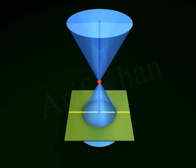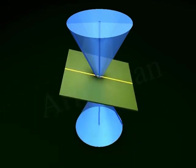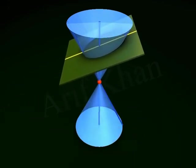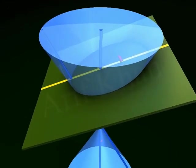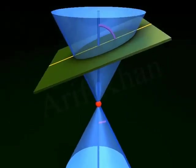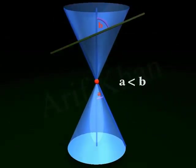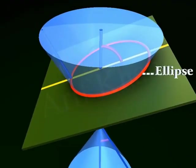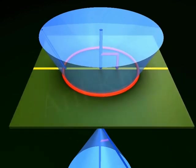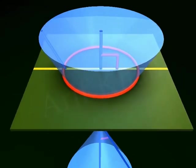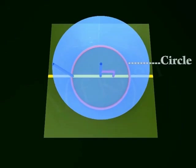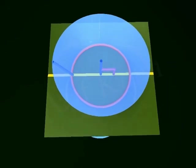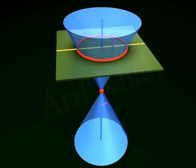Ellipse. When the plane intersects the double right circular cone in such a way that the angle between the plane and the axis is greater than the vertex angle, we get a closed curve called an ellipse. When the plane is perpendicular to the axis, the ellipse becomes a circle. Thus, a circle is a special type of ellipse.